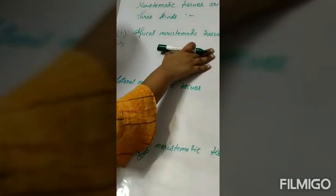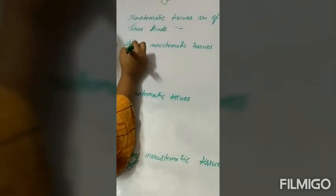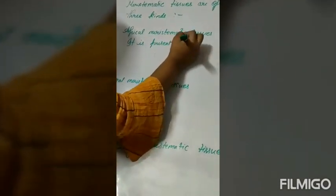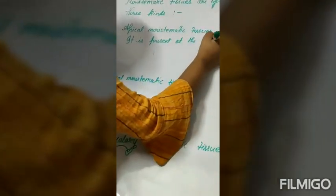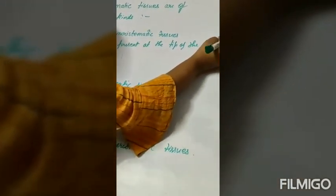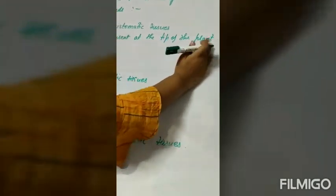In apical meristematic tissues, it is present at the tip of the plant. It increases the length of the plant.